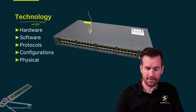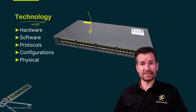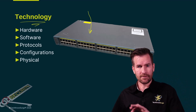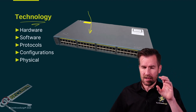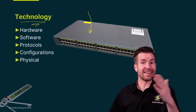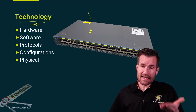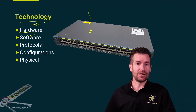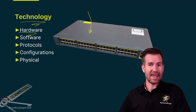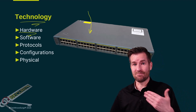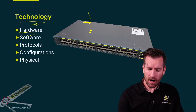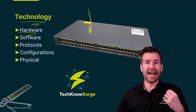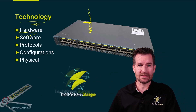Let's give an example using a switch. A switch interconnects different hardware — different computers, routers, and networking devices so they can communicate. It is a piece of hardware. It has wires, power, processing, and memory inside. Each one of those hardware components has its own set of vulnerabilities.